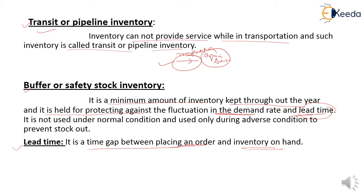Buffer or safety stock inventory is not used under normal conditions — it is used only during adverse conditions to prevent a stock-out. In a previous session we discussed stock-out cost: if your organization is not able to fulfill customer demand, the organization suffers a loss known as stock-out cost. To prevent stock-out, the organization carries buffer or safety stock inventory.